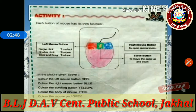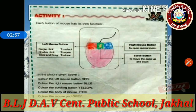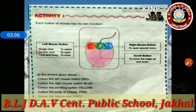Now, here is a picture of a mouse. In this picture, color the left mouse button red, the right mouse button blue, the scrolling button yellow, the body of the mouse pink, and the mouse pad gray.